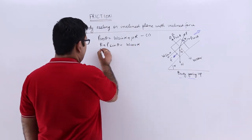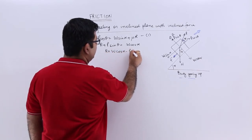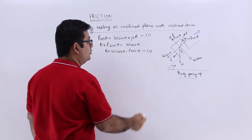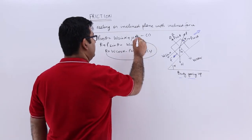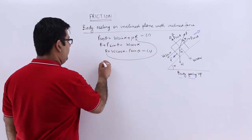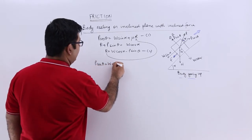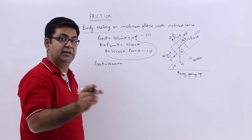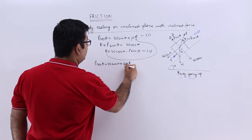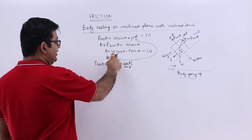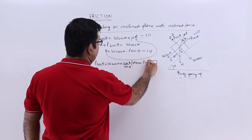For the perpendicular forces you will have r + p·sinθ = w·cosα. We need to have a value for r, so r = w·cosα − p·sinθ. Let us call this equation two. I will substitute the value of r in equation one, so we get p·cosθ = w·sinα + μ, which is tanφ = sinφ/cosφ, into r = w·cosα − p·sinθ.